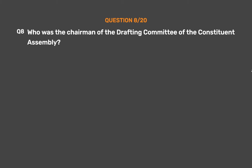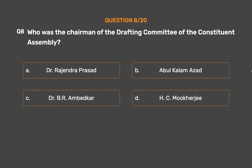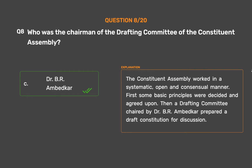Question 8: Who was the chairman of the drafting committee of the Constituent Assembly? Option A: Dr. Rajendra Prasad. Option B: Abul Kalam Azad. Option C: Dr. B. R. Ambedkar. Option D: H. C. Mukherjee. The correct answer is Option C: Dr. B. R. Ambedkar. The Constituent Assembly worked in a systematic, open and consensual manner. First, some basic principles were decided and agreed upon. Then a drafting committee chaired by Dr. B. R. Ambedkar prepared a draft constitution for discussion.